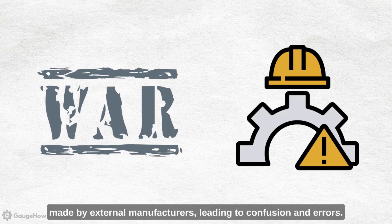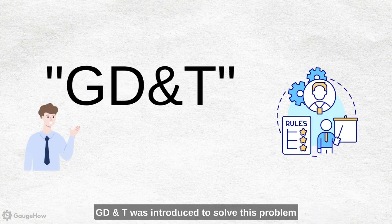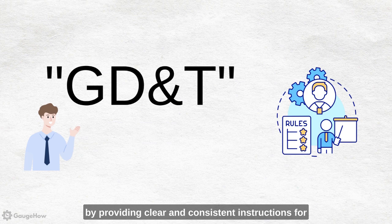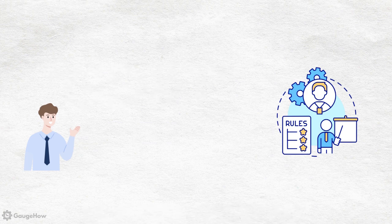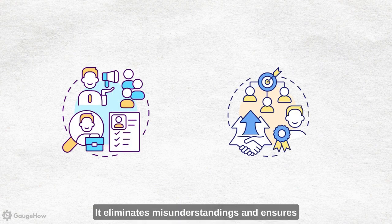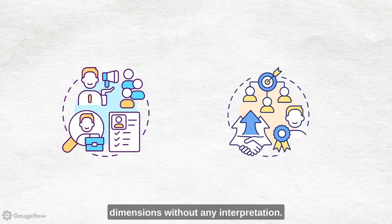This led to confusion and errors. GD&T was introduced to solve this problem by providing clear and consistent instructions for everyone involved in the manufacturing process. It eliminates misunderstandings and ensures that everyone understands the required dimensions without any interpretation.